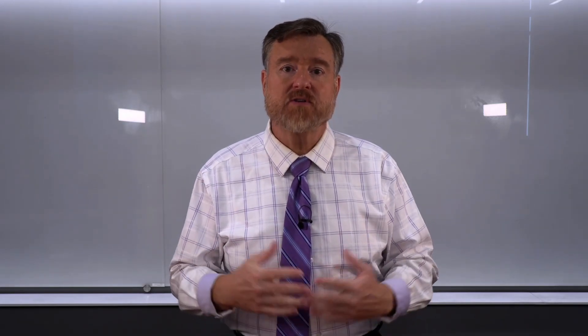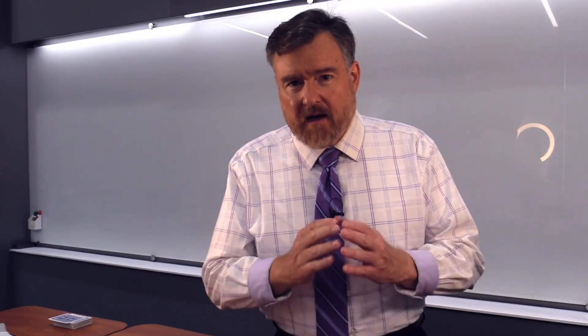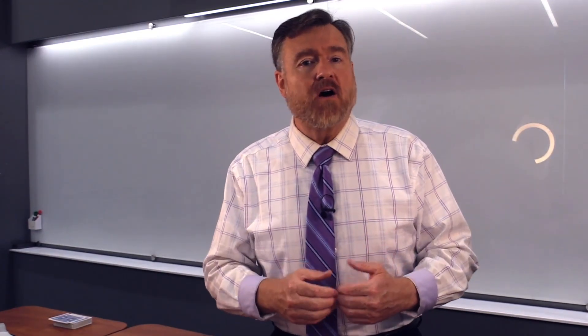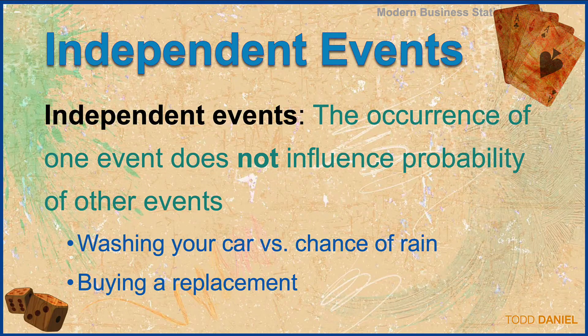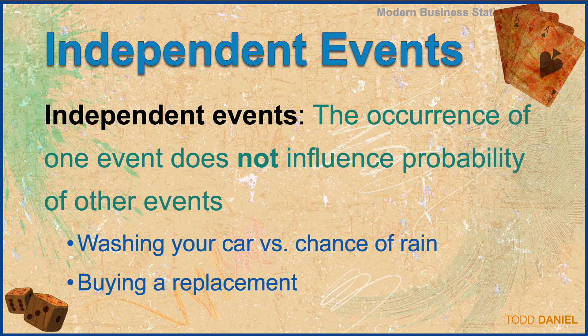These events can influence the probability of other events occurring. Another relationship we might look for is whether events are independent. Events are independent when the occurrence of one event does not influence the probability of other events. For example, washing your car versus the chance of rain — does washing your car cause it to rain? It might feel like that. However, whether you wash your car or not is independent of whether it rains.